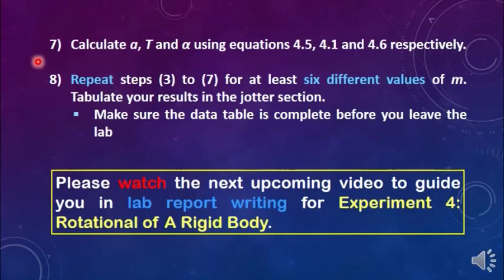Procedure 7: Calculate the values of the linear acceleration a, the tension in the string T, and the angular acceleration alpha using equations 4.5, 4.1, and 4.6 respectively.